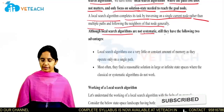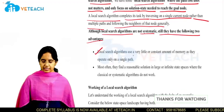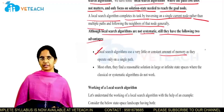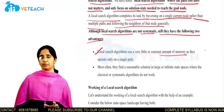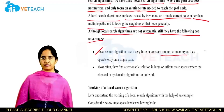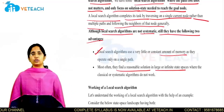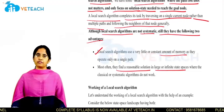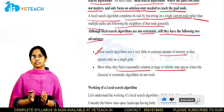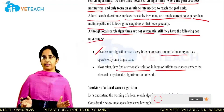Even though local search algorithms are not systematic, they still have two advantages. First, they use a very little and constant amount of memory, so the space complexity is less compared to informed and uninformed search strategies. Second, they can find a reasonable solution in large or infinite state spaces — whereas classical algorithms can only find solutions when the search space is small.